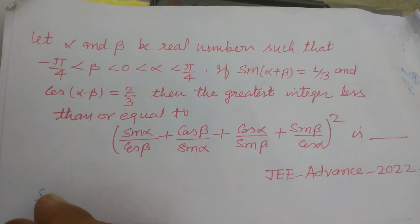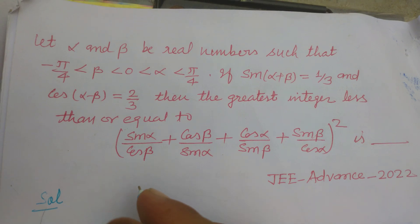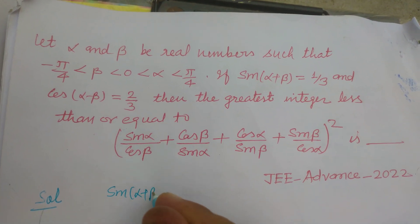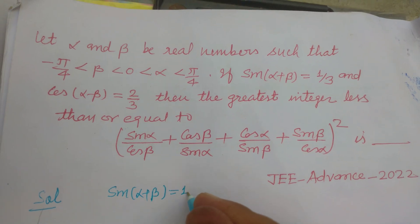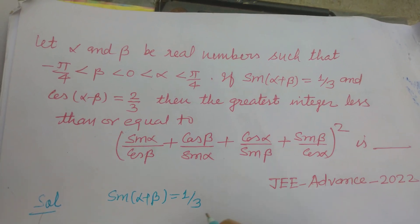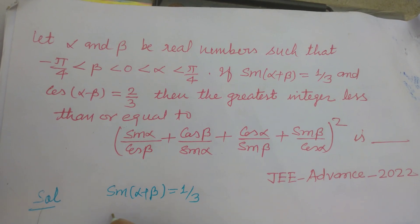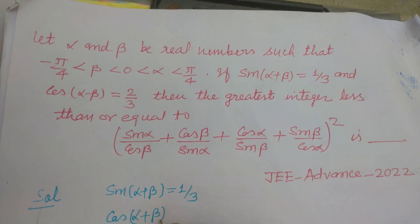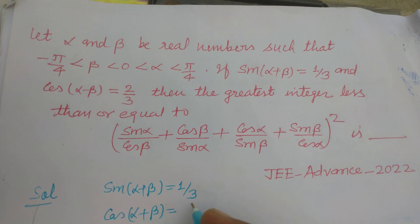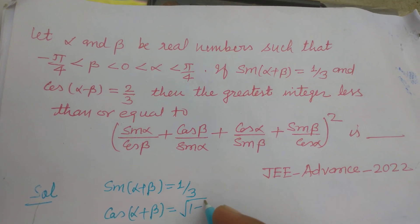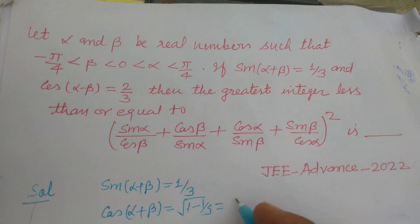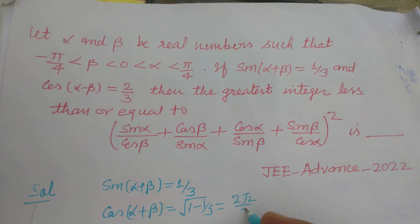So students, here it is given that sin(α+β) is 1/3, therefore we can find cos(α+β) easily. Square root of 1 minus 1/9, or 9 minus 1 is 8, so this is 2√2/3.